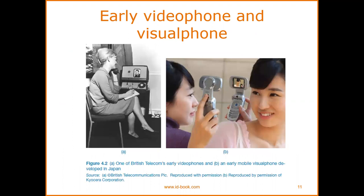In early video phones and visual phones, communication pathways developed. The mode of communication was through radio frequency. Their communication path used 'over, over' like walkie-talkies. Then there were encrypted communications like Morse code for encrypted communication. One of British Telecom's early video phones and early mobile visual phones were developed in Japan.